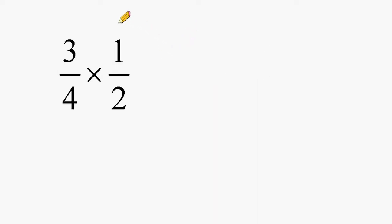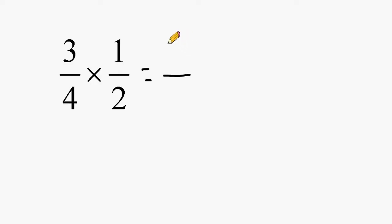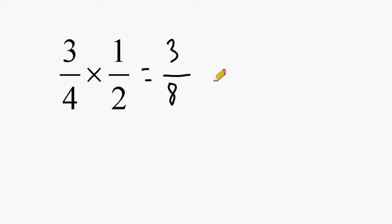In this example we have 3 fourths multiplied by 1 half — we are figuring out what 3 quarters of 1 half is equal to. We multiply the numerators together: 3 times 1 is 3. The product of the denominators 4 and 2 gives us 8. So 3 quarters of 1 half is equal to 3 eighths.